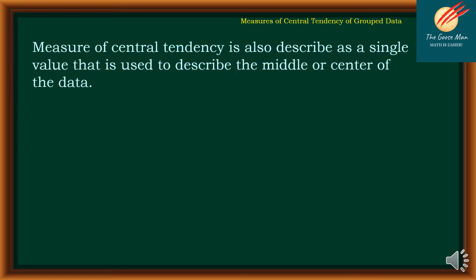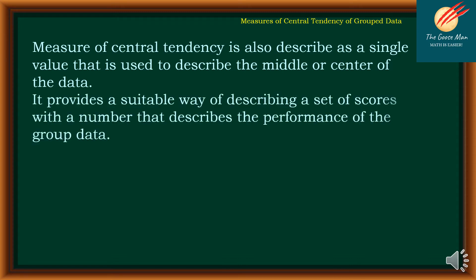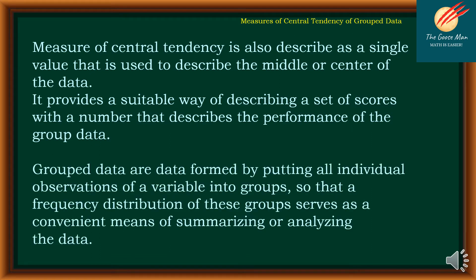Let's recall: the measure of central tendency is described as a single value used to describe the middle or center of the data. It provides a suitable way of describing a set of scores with a number that describes the performance of the group. Grouped data are data formed by putting all individual observations of a variable into groups.